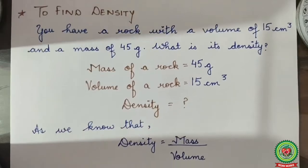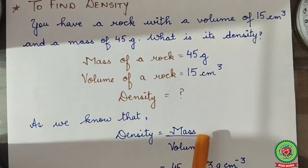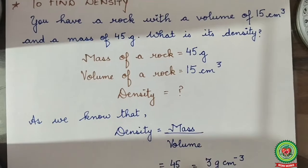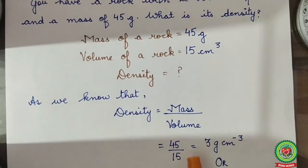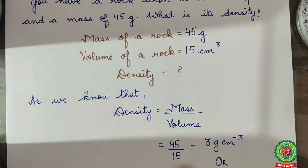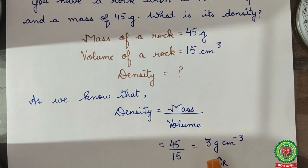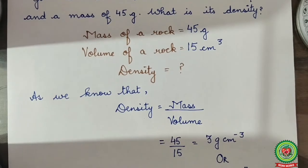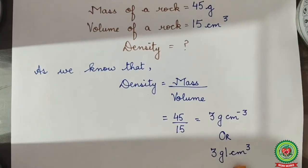As we know that density equals mass upon volume, putting the values of mass and volume, we will know the density. Mass 45, volume is 15. So 45 upon 15, the answer comes as 3 gram centimeter raised to power minus 3, or 3 gram per centimeter cube.